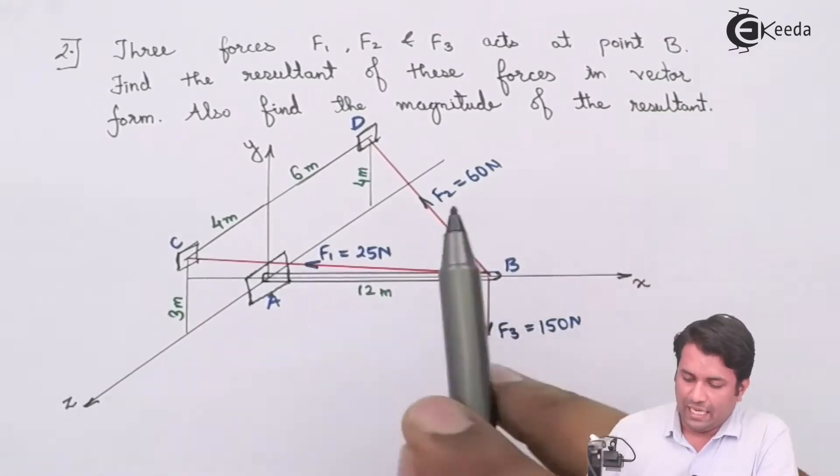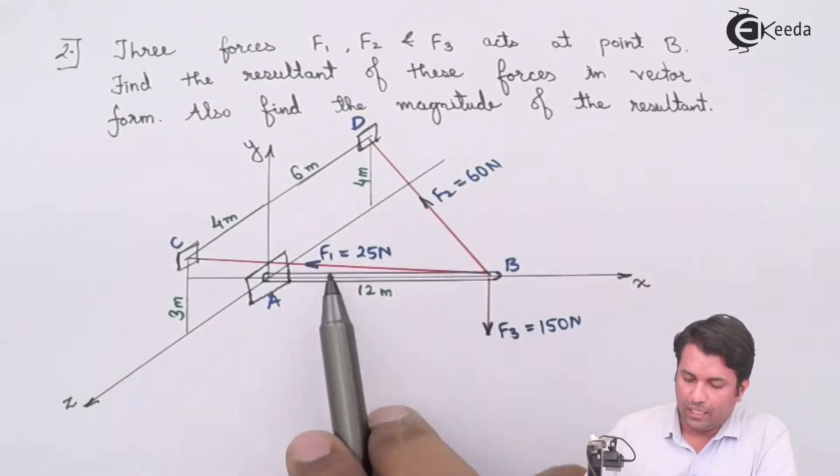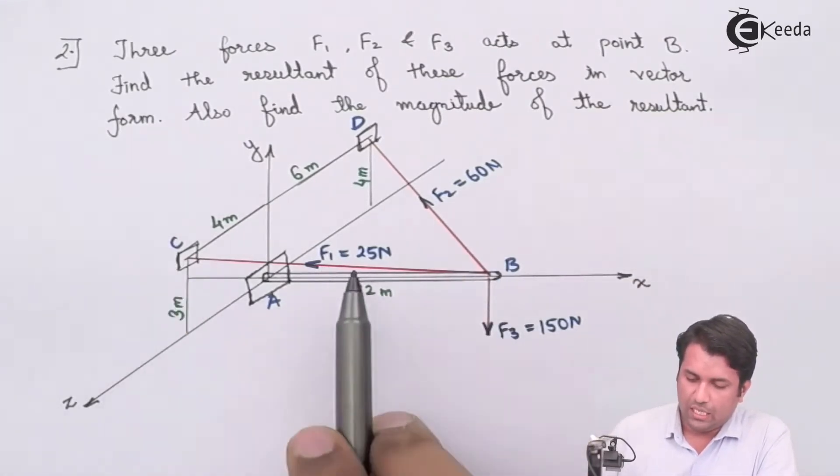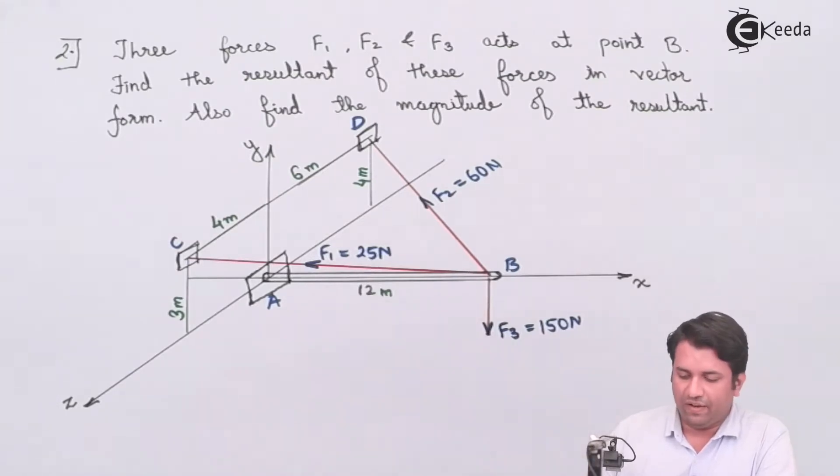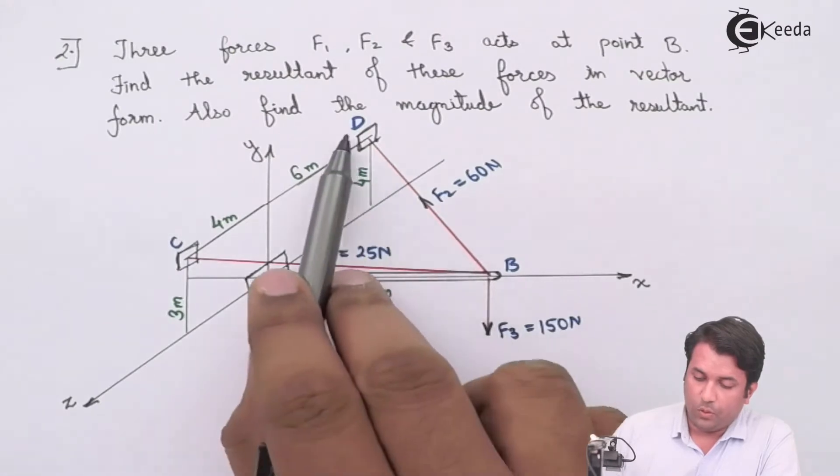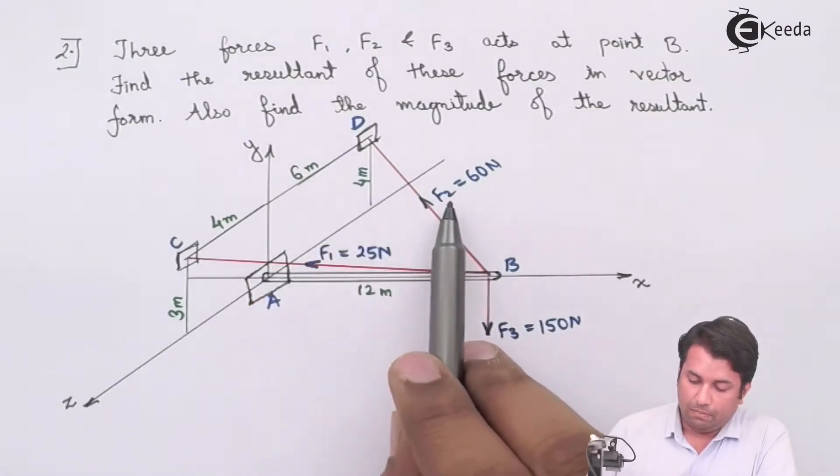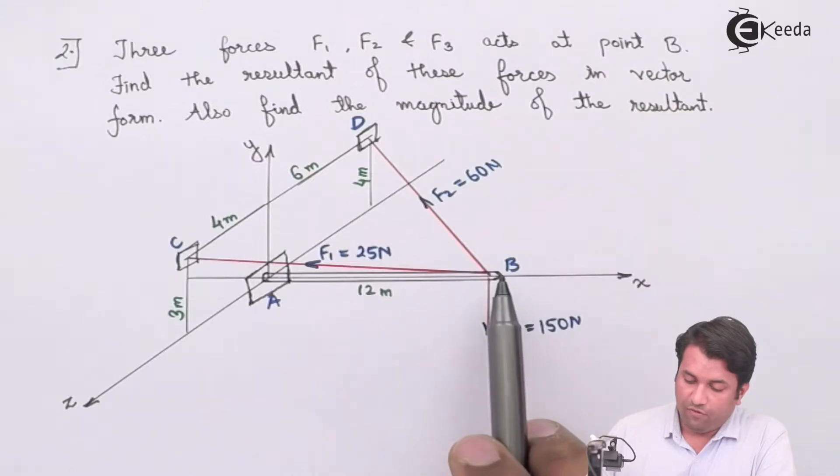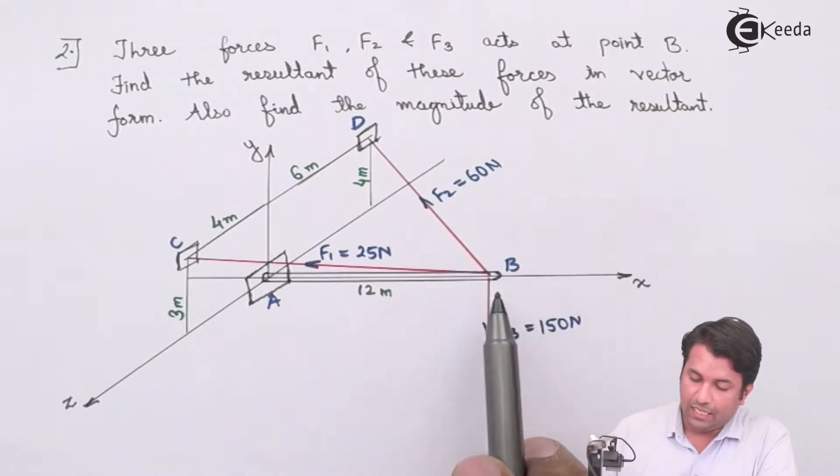Now you can see that I have force F1 acting from B to C with a magnitude of 25 Newtons. Force F2 is acting from B to D with a magnitude of 16 Newtons.